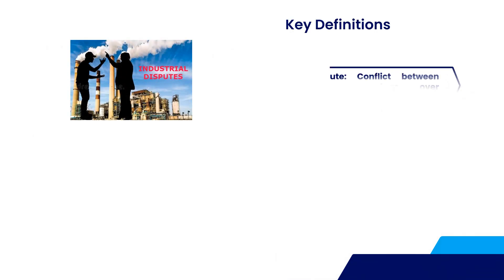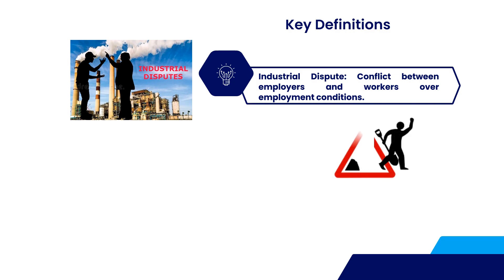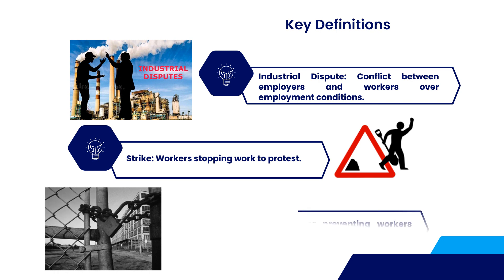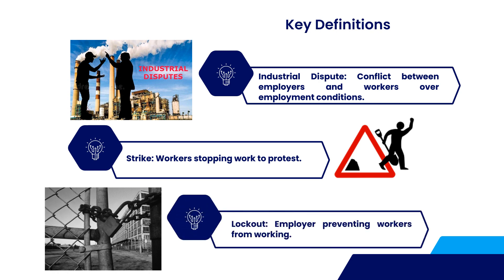Now let's understand some important terms under the act. An industrial dispute is any disagreement between employers and workers related to employment, work conditions, or labor policies. A strike is a situation where employees stop working as a form of protest. A lockout is a scenario where the employer prevents workers from entering the workplace to enforce certain demands.